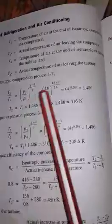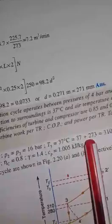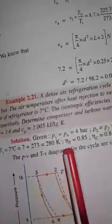The given values are: P1 = P4 = 4 bar, P2 = P3 = 16 bar. T3 = 37°C converted to Kelvin = 310 K, T1 = 7°C converted to Kelvin = 280 K. Isentropic efficiency of turbine = 0.85, compressor efficiency = 0.8, gamma = 1.4, Cp = 1.005 kJ/kg·K. The cycle has been explained on the PV and TS diagrams.